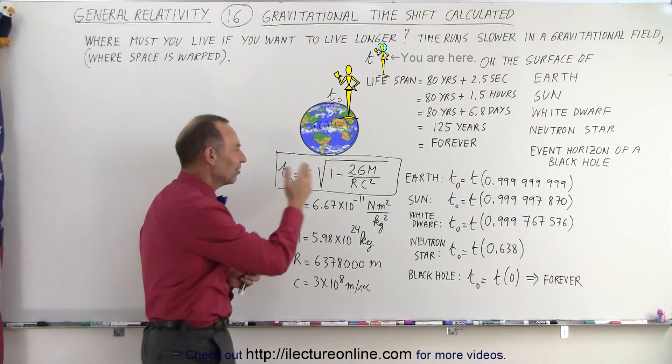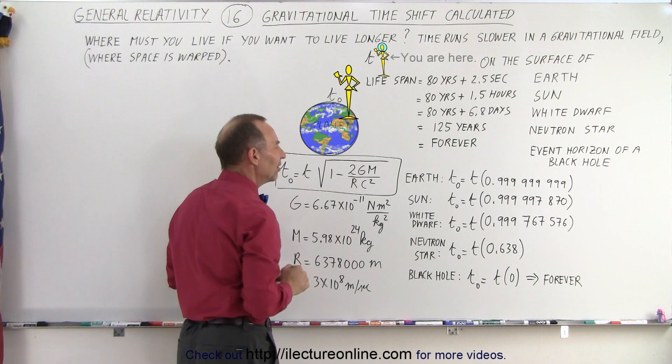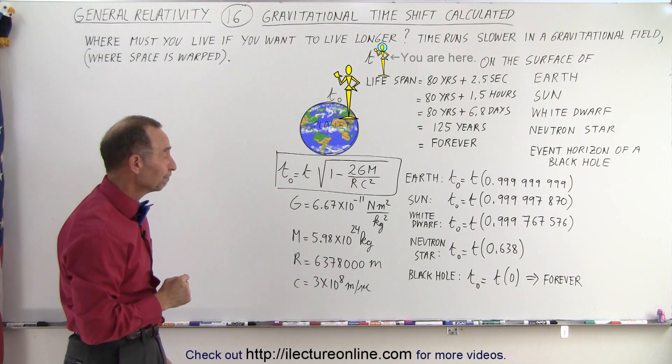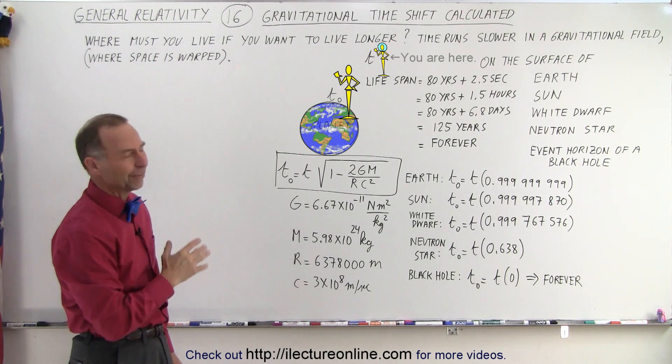So 1 minus that and then divided by c squared gives you that time differential. You must be smart to figure those things out. Now, I would have never done that.